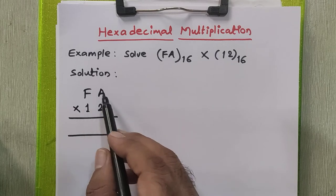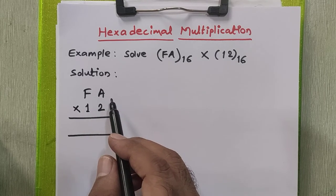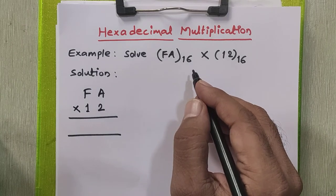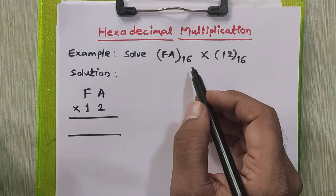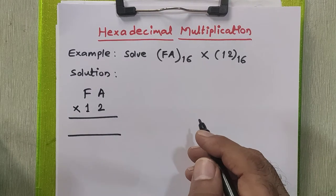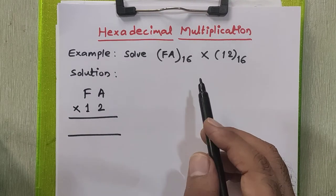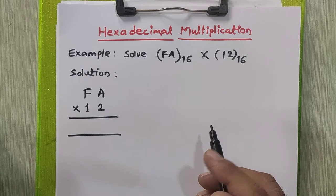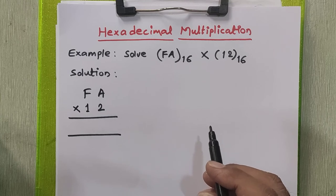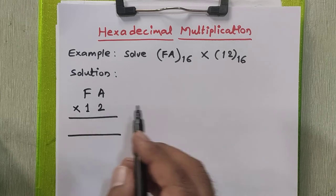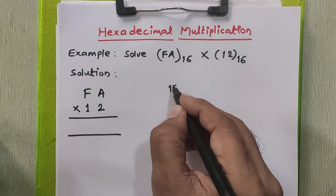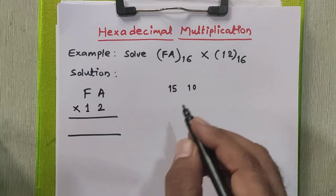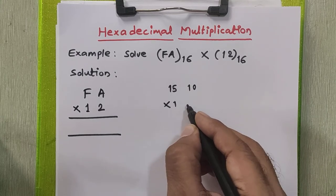Now what is F in hexadecimal and what is A in hexadecimal? As we know, the base of the hexadecimal number system is 16 and the valid digits are 0 to 15, where we use 0 to 9 all digits and 10 is represented by A, 11 is by B and so on till F. 15 is represented by F. So F is 15 in hexadecimal, so I'll write 15 here. What is A? It is 10, so I'll write 10 here multiplied by 1 and 2.